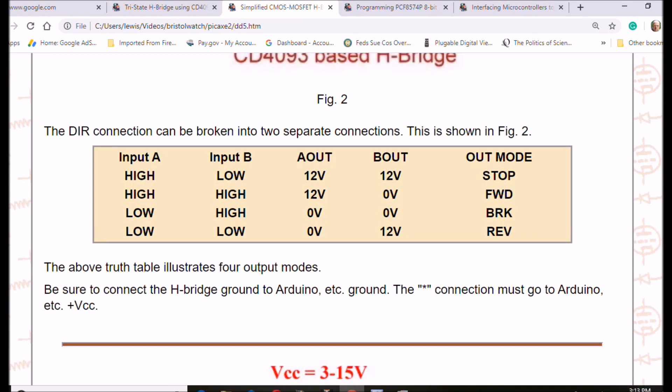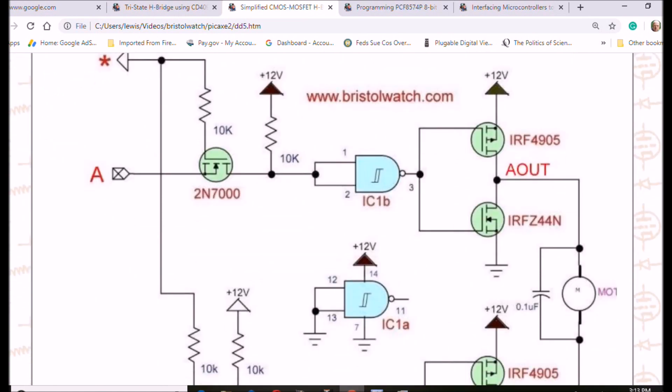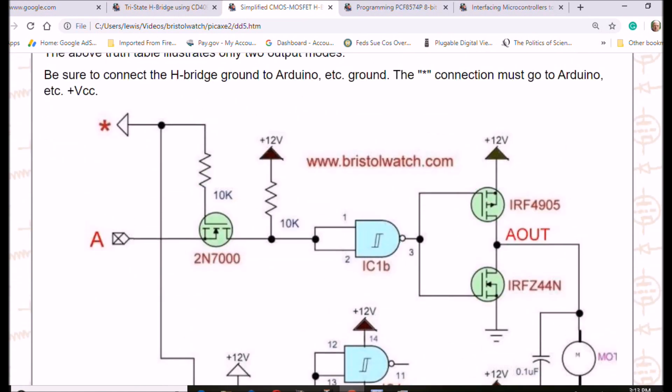And that's pretty much it. But you will not get shoot through. These Schmitt trigger inputs will pretty well assure that you won't have a shoot through problem because it'll switch quick and clean. And like I said, it uses a single CD4093.